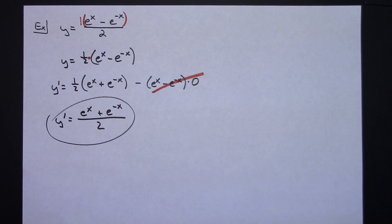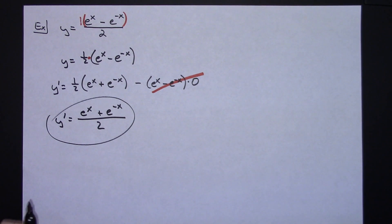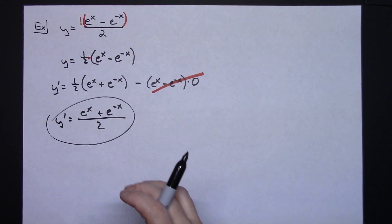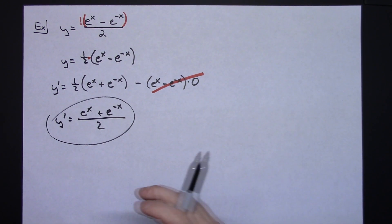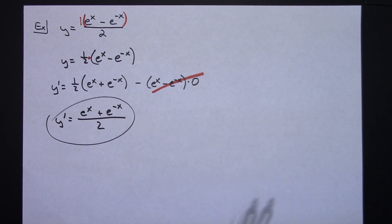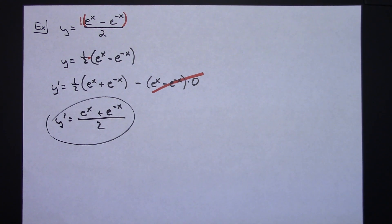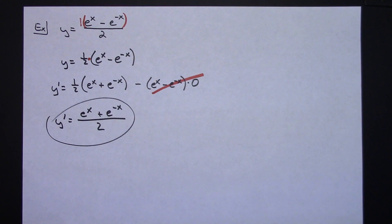So those are five examples of taking the derivative with e to the x, also placed in a variety of other functions such as natural log, quotient rule, and product rules. Thanks for watching and don't forget to subscribe to the channel.